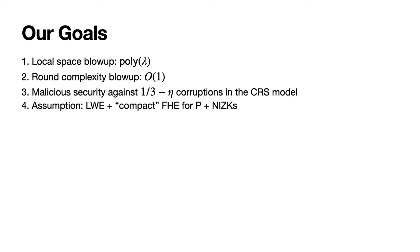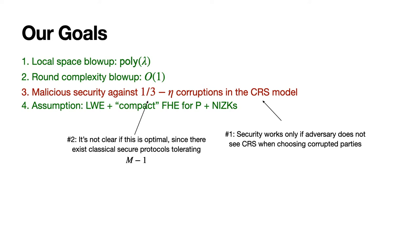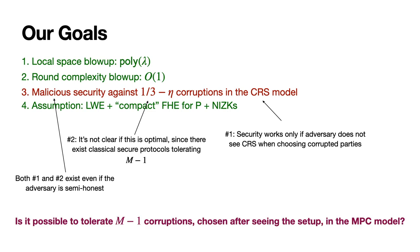The goal of our work is to improve upon the state of the art in this new line of research. There are two main deficiencies in the previous protocol: first, security only holds if the adversary does not see the CRS when choosing the corrupted parties, and there is an obvious and devastating attack if this is not true. Second, security only holds for up to one-third corruptions. Interestingly, these two deficiencies seem tightly coupled to the overall approach of the previous work, because they hold even if the adversary is semi-honest. We see it as an important question whether these deficiencies are inherent in the MPC model, and we believe this question is interesting even if we limit ourselves to semi-honest security.